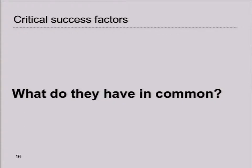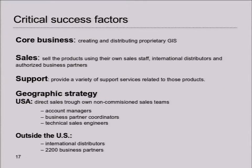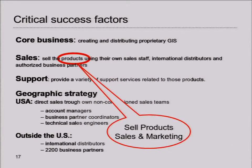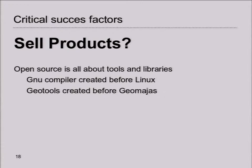What do they have in common? Well, back to the business model of Esri. One thing that is particular is they sell products and do sales and marketing. Now I'm talking to the people of the open source community. Open source is about libraries. We are building tools, we are creating things. There was a GNU compiler before Linux was created. GeoTools was created before GeoServer was created. So selling products is rare for people from the OSGeo community.